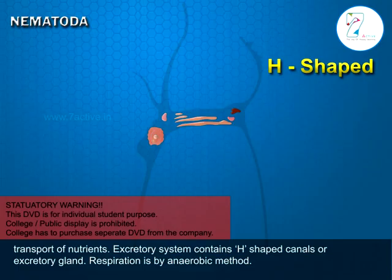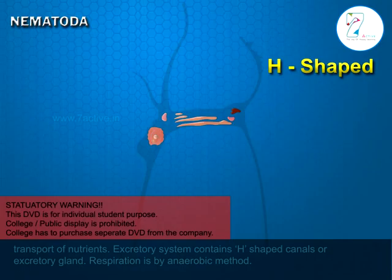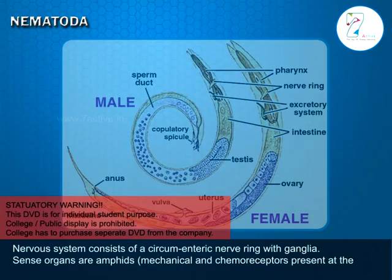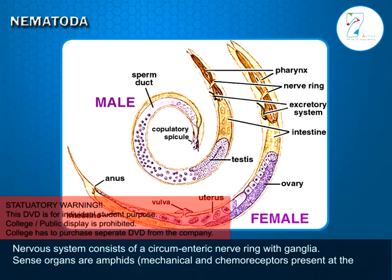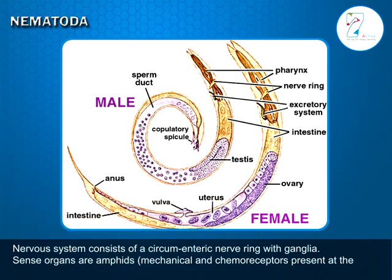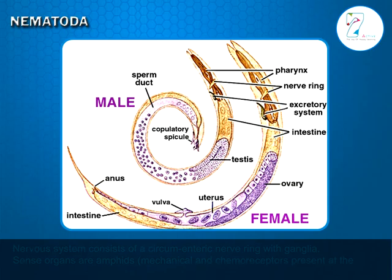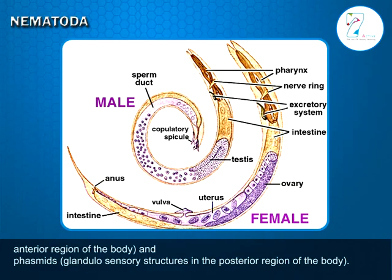The excretory system contains H-shaped canals or an excretory gland. Respiration is by anaerobic method. The nervous system consists of a circumenteric nerve ring with ganglia. Sense organs include amphids — mechanoreceptors and chemoreceptors at the anterior region — and phasmids, which are glandulo-sensory structures in the posterior region.